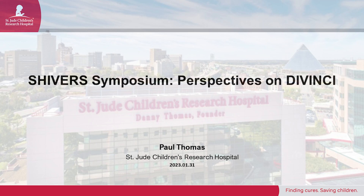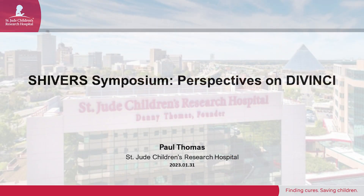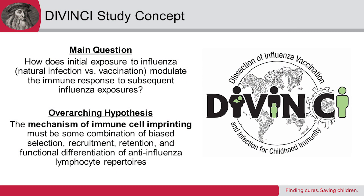Yesterday I talked about Shivers 2, which is what Richard and Sue have introduced with adult cohorts mainly. Today I'll tell you about Shivers 3, which is part of a program we call DaVinci — an NIH collaborative large grant to ask the question of how initial exposure to influenza in infants, either by infection or by vaccination, modulates the immune response to subsequent influenza exposures.